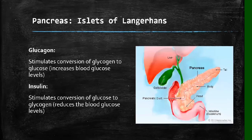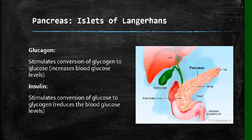Moving along, we have the pancreas, which consists of the islets of Langerhans. The pancreas secretes very important hormones that control sugar levels in our bodies. Glucagon and insulin play different roles. Glucagon stimulates the conversion of glycogen — which is glucose in storage form — back to glucose, to increase blood glucose levels. Insulin stimulates the conversion of glucose to glycogen, which is stored in our liver and muscles, so that blood glucose levels are reduced.